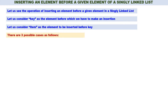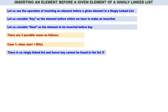There are three possible cases. Case 1: when start is equal to null — there is no linked list, so there is no possibility of finding key in the linked list, and hence there is no possibility of insertion. There is no singly linked list and hence key cannot be found in the list.